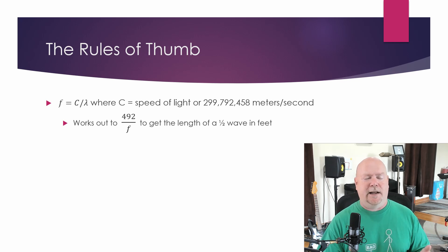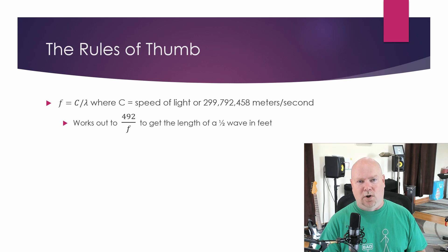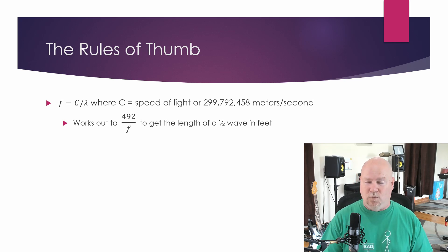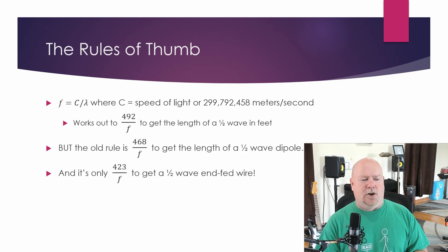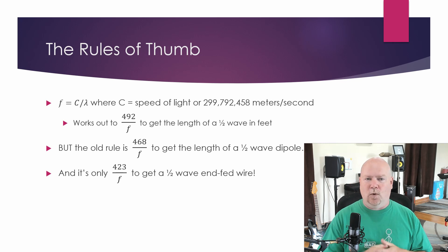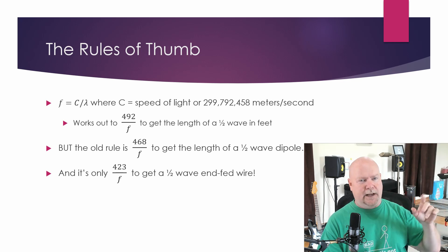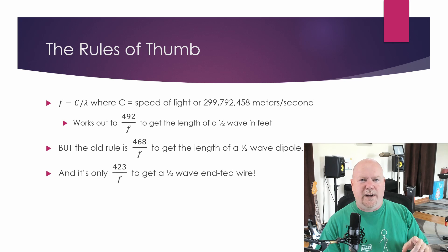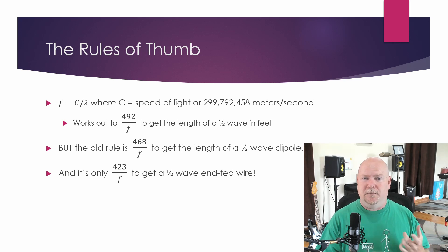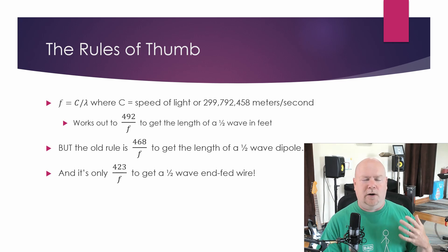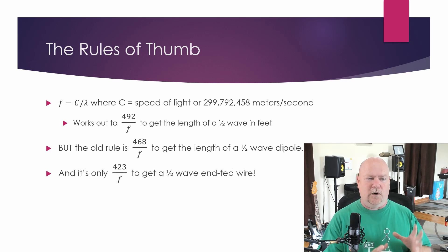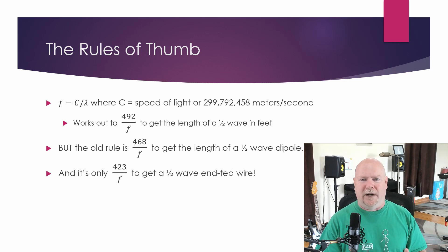Cut your antenna using that and it's going to be a mile too long, which is why we have the updated rules of thumb: 468 over the frequency in megahertz if you want a half wave that you're going to use as a dipole — hang the entire thing up in the air and center feed it. But all the way down to 423 divided by the frequency in megahertz if you are building a vertical or a random wire, something where you essentially only have one wire doing your radiating.